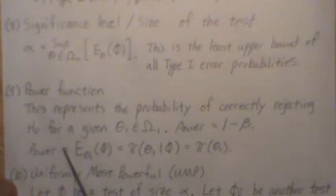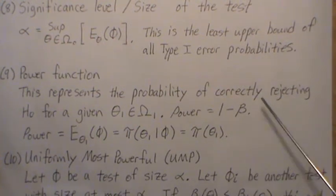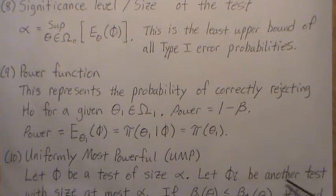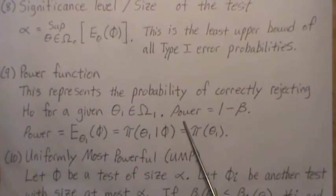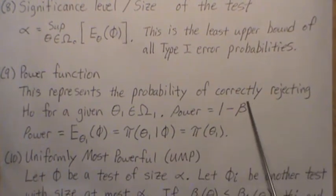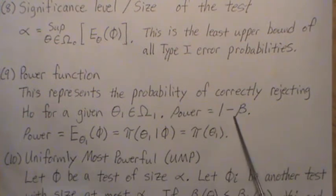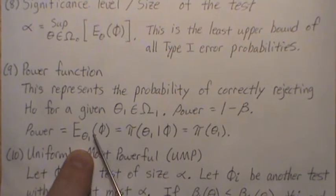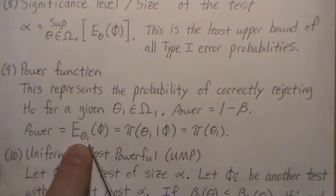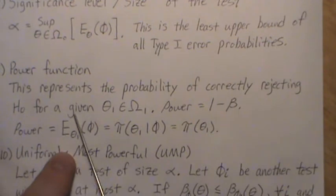The power function represents the probability of correctly rejecting H naught for a given theta that lives in the alternative region. Power is one minus beta. Beta is the probability of a type two error, so one minus it is the probability you accept the alternative when you should. That's the power. Power is the expected value of phi, assuming that theta one is true.